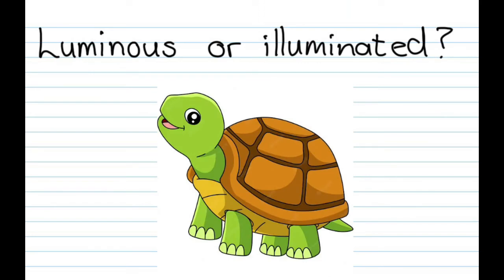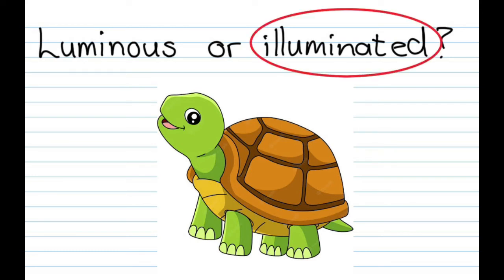How about animals like this cute little turtle? This turtle would be illuminated, but there are animals like certain types of algae and organisms that live deep down in the ocean that do give off their own light — and they would be luminous.